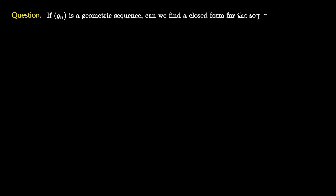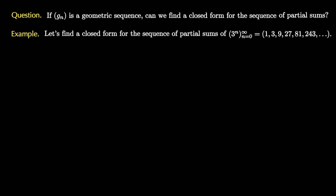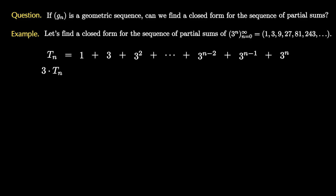Now that we fully understand geometric sequences, we're ready to find their sequence of partial sums using a process called multiply, shift, and subtract. Our goal is to find a closed form for the sequence of partial sums of a geometric sequence g_n. Let's start with an example: let's find the closed form for the sequence of partial sums of the sequence 3 to the n. We're looking for the sum 1 plus 3 plus 3 squared all the way up to 3 to the n. Here's the trick.